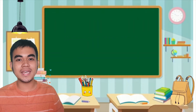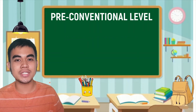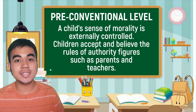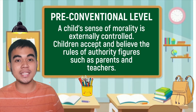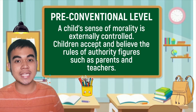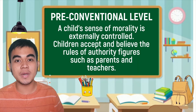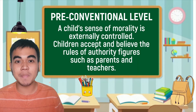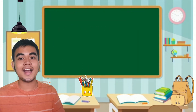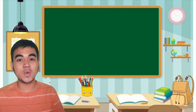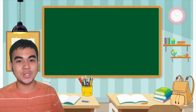The first level is the pre-conventional level. At this level, a child's sense of morality is externally controlled. Children accept and believe the rules being imposed by authority figures such as parents and teachers. Under the pre-conventional level, we have stage 1 and stage 2.